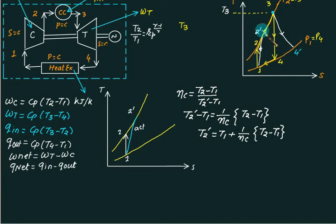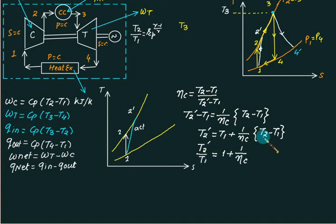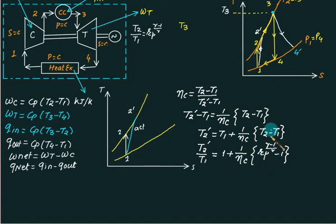To calculate T2-dash in one step, divide the entire expression by T1. This gives T2-dash over T1 equals 1 plus (1/eta_c) multiplied by (T2/T1 - 1), where T2/T1 equals rp to the power (gamma-1)/gamma. So in one single step you can calculate T2-dash directly from T1 and the pressure ratio.